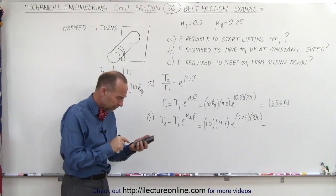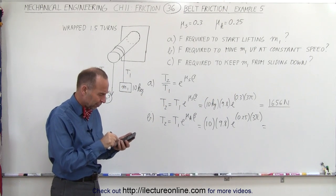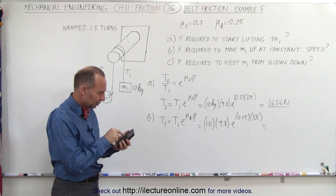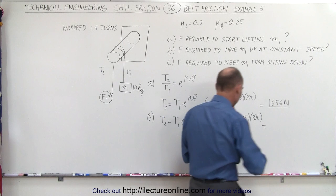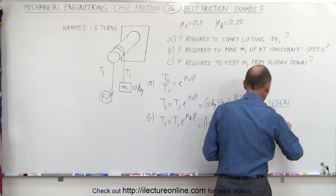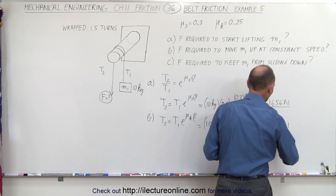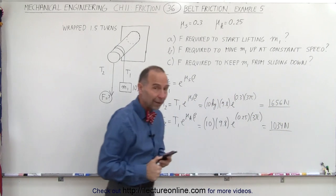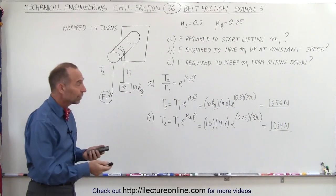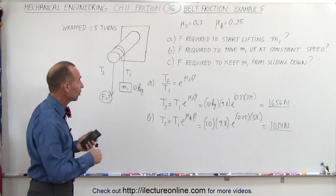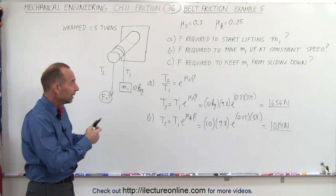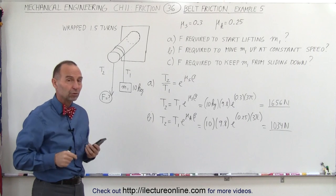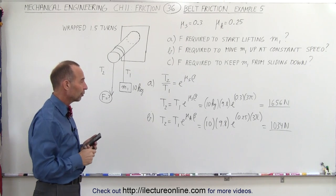So this becomes 0.25 times 3 times pi, use that as exponent, and times 98. And notice at this point it's 1034 newtons. So quite a drop by changing from static to kinetic coefficient of friction. So you can see that if you have a rope wrapped around the peg, once you get the thing moving, then everything will start moving much more easily with a lot less force required.